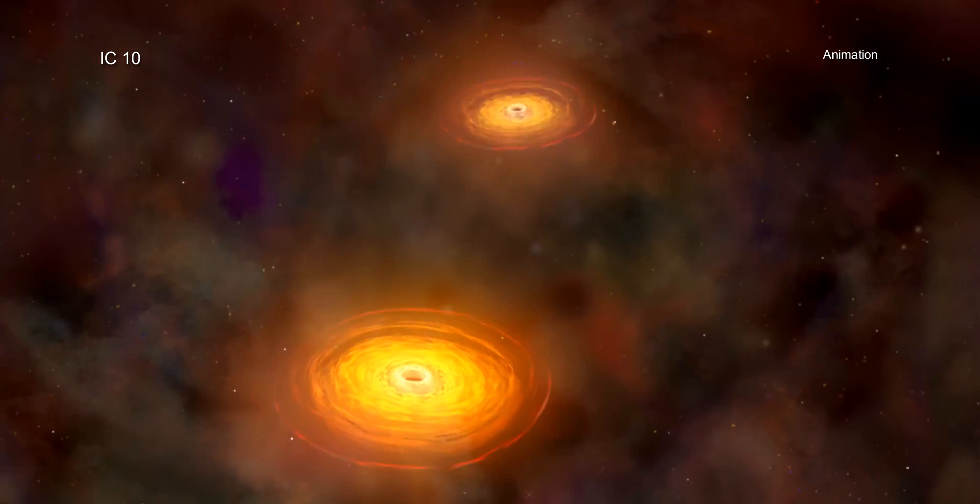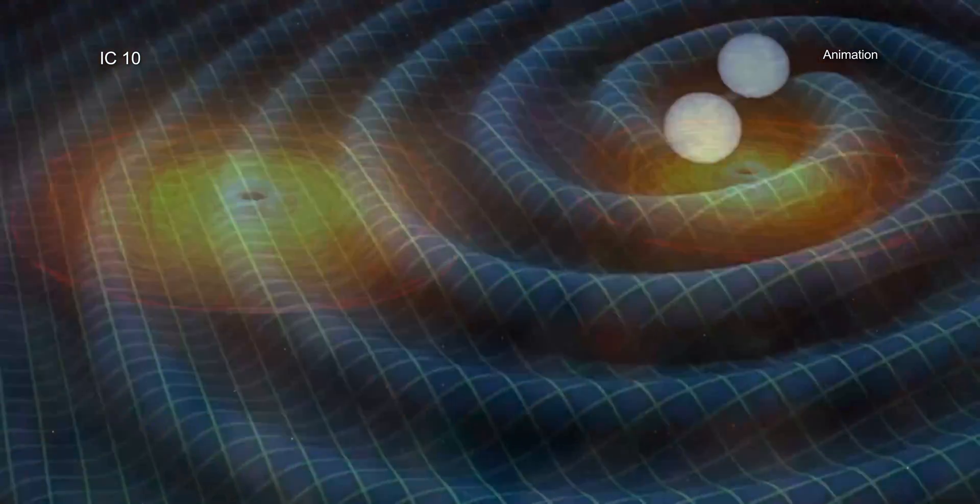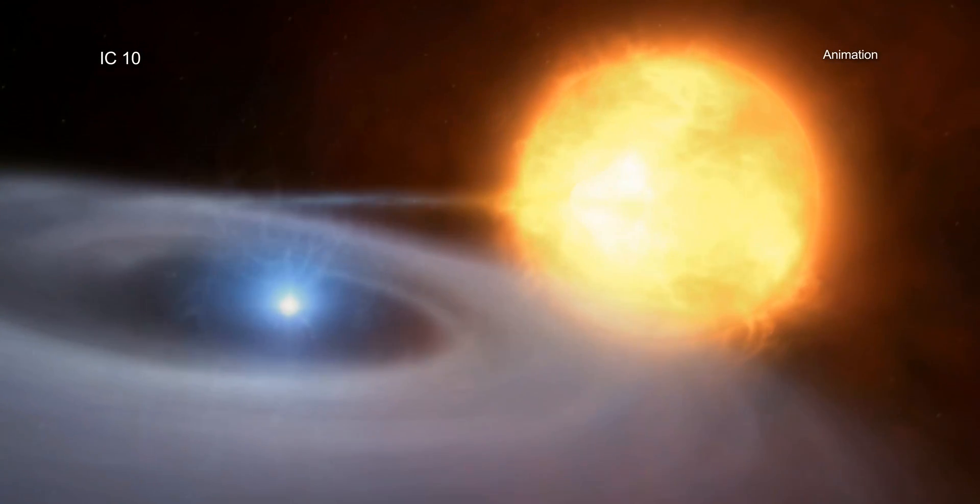The end result is two compact objects, either a pair of black holes, a pair of neutron stars, or a black hole and neutron star.